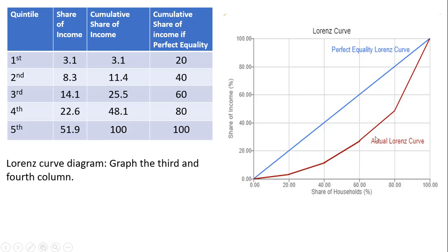This red line is the actual Lorenz curve, and this blue line is the perfect equality Lorenz curve. That's how you graph Lorenz curves.